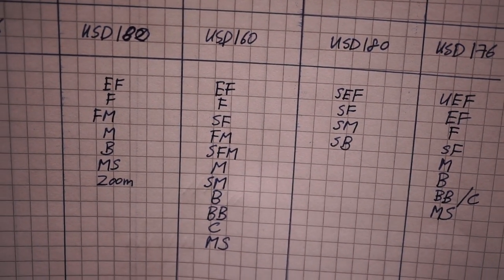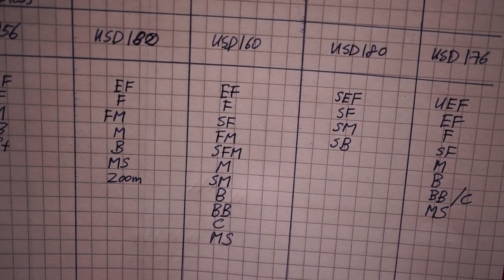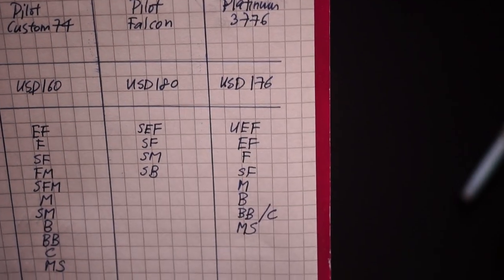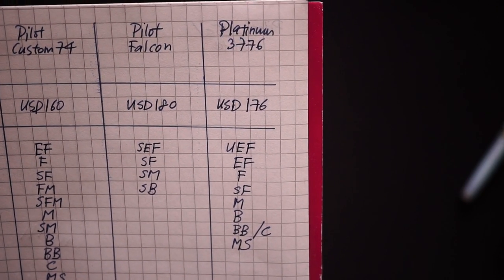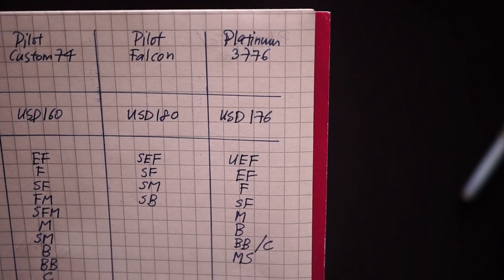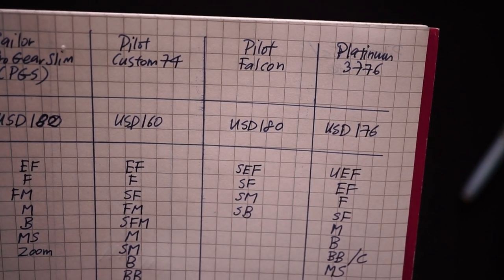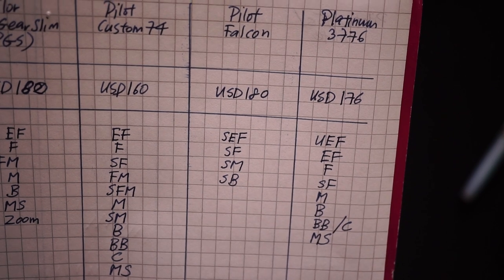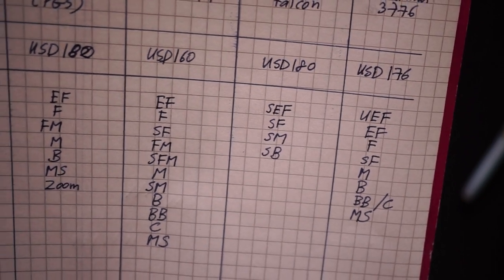Custom 74 has probably the most diverse nib range and I'm not going to read all this out. They have quite a significant range to choose from. The next pen that has quite a lot of nibs would be the Platinum 3776 line. Not every nib would be available for every finish. Last but not least, the Falcon. Most of their nibs are soft because of how the Falcon nib is designed: soft extra fine, soft fine, soft medium, and soft broad.